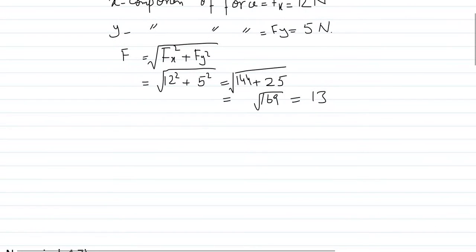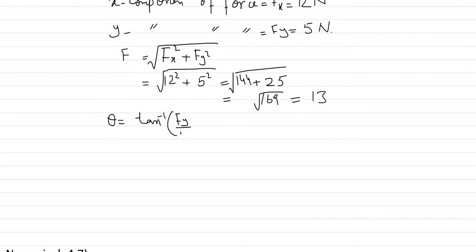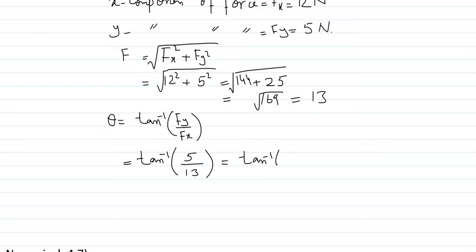Now we find the direction of force. Direction is determined by angle theta. The formula is θ = tan⁻¹(Fy / Fx). Putting in the values: tan⁻¹(5/12) = tan⁻¹(0.4166). Calculating with a calculator, we get θ = 32.6 degrees.